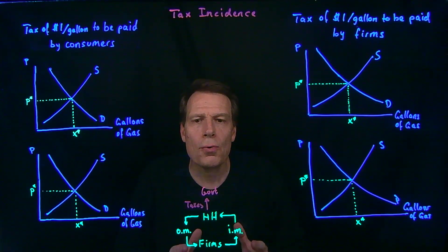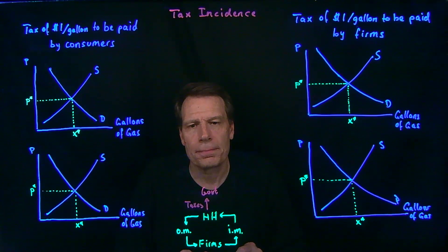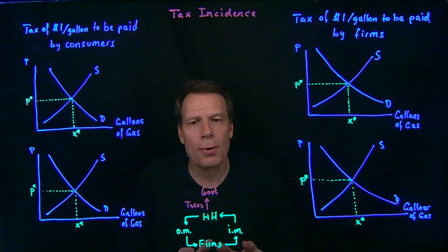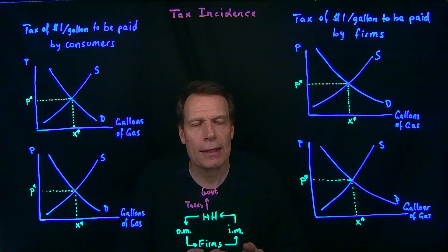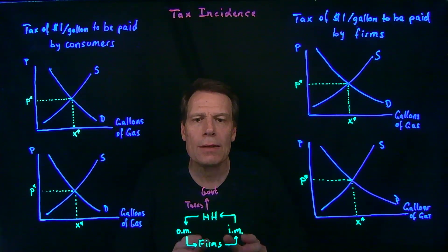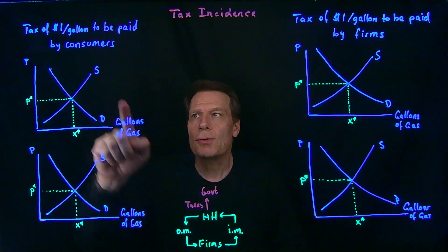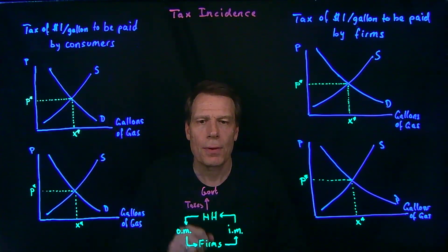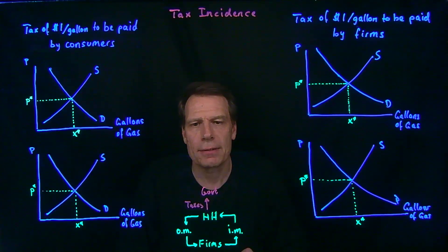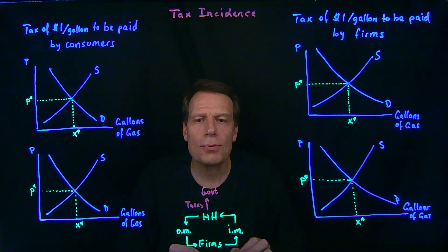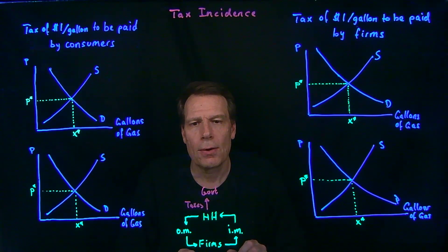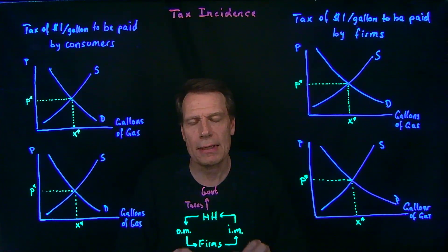Tax incidence is about who pays for a tax. We're going to think about that in the context of a $1 tax per gallon of gasoline. If you're going to impose a $1 tax per gallon of gasoline, you can legally or statutorily do it in one of two ways: you can say that consumers have to pay the tax, or you can say that firms have to pay the tax. These are two different versions of statutory incidence, where the statutory incidence of a tax is who is legally obligated to pay the tax.